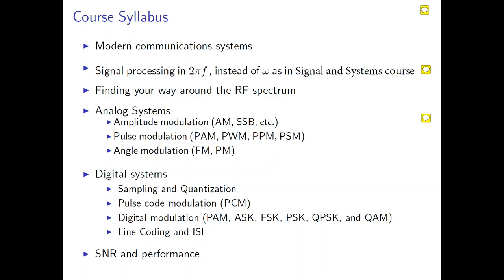How do you determine which modulation to use? Based on the requirements of your application and your customer. As a communication engineer, you need to know the merits and demerits of each modulation and how to map them to applications. For example: if a TV station wants to talk to a satellite, which modulation is more suitable? If you're using a wireless cellular phone, which modulation fits? If you're talking to a drone flying in the sky, which would you use?